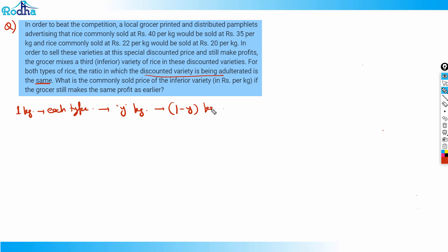He uses y kg of the original variety and hence I can say that 1 minus y kg will be of adulterated type. So one kg of rice of each type, in that y kg is of original variety and 1 minus y kg is of adulterated part.